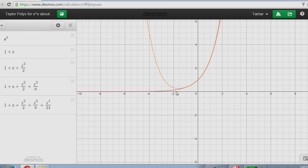And we also notice that the higher the degree polynomial, the further away from x equals 0 we can go and still get a pretty good approximation.